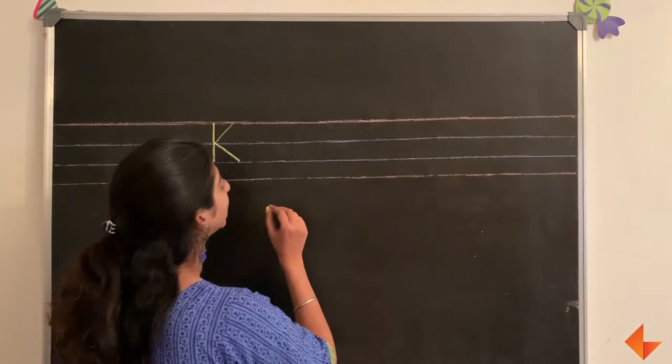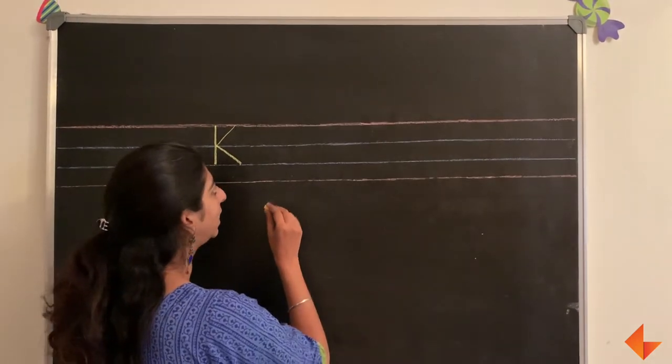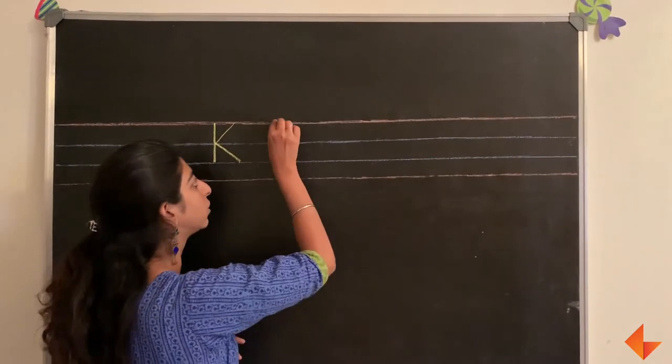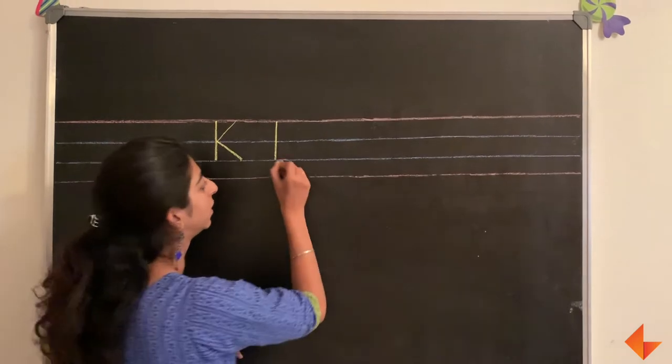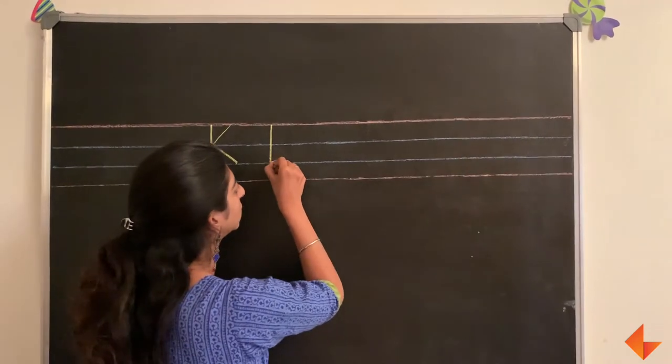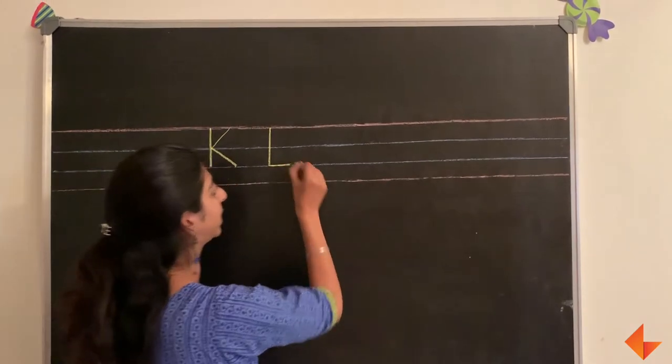To write the letter L, draw a standing line and draw a sleeping line.